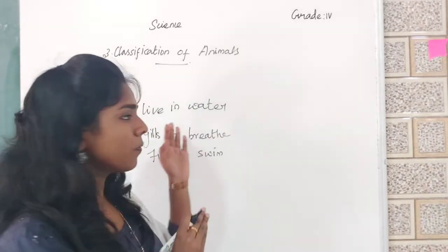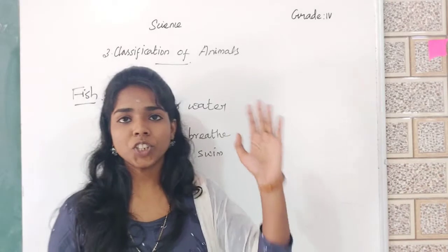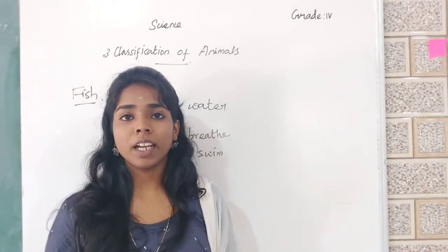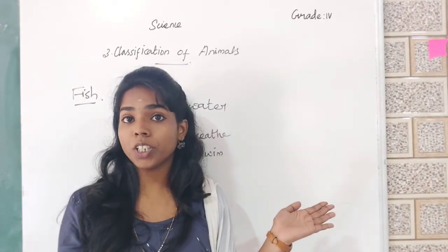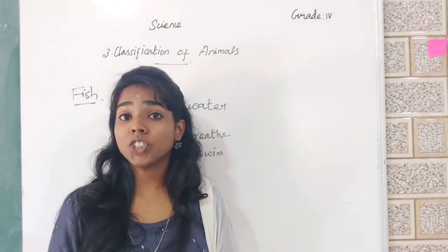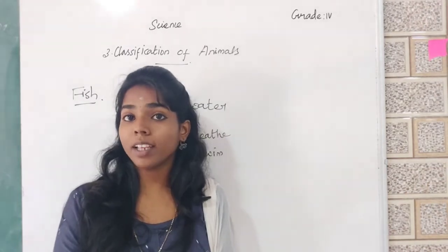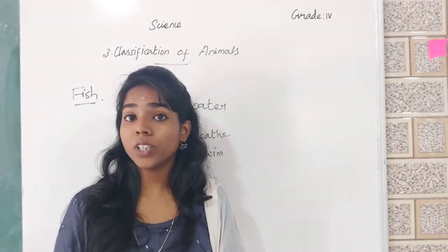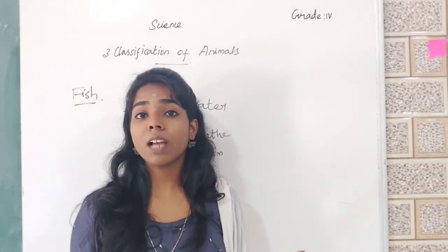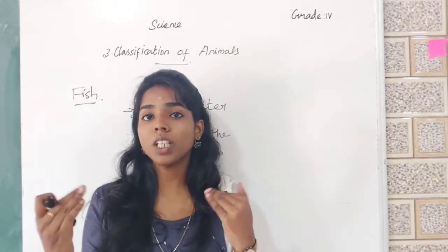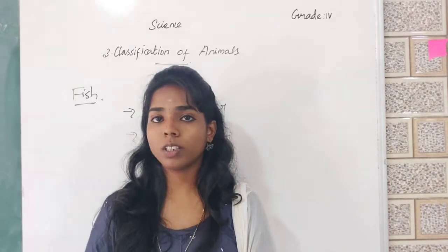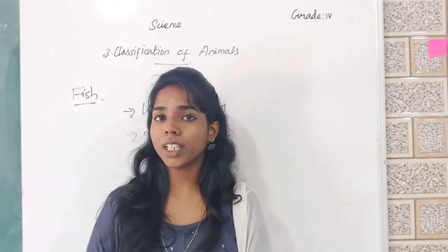So what are the features? The fish can live in water, and there are varieties of fish. The fish have gills to breathe and fins to swim in water. And they have some special body parts to survive in water. Do you understand?